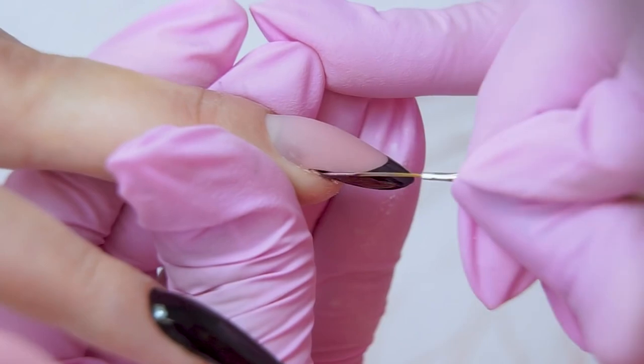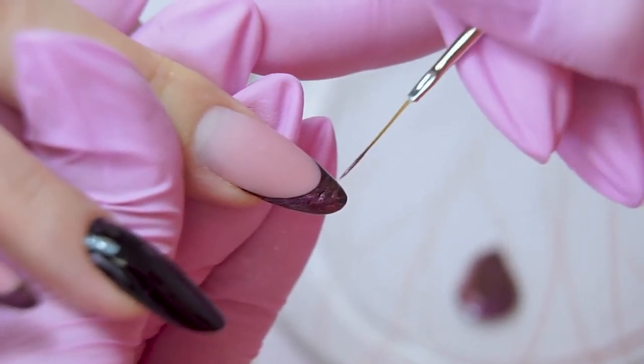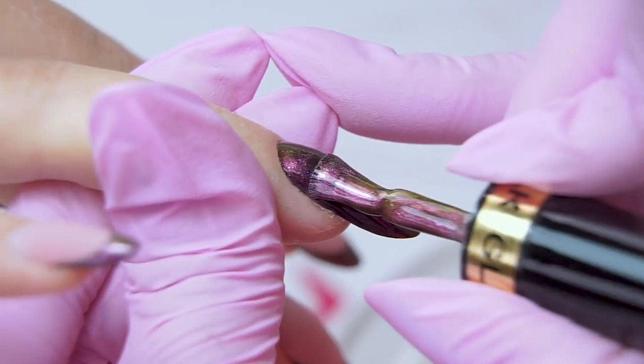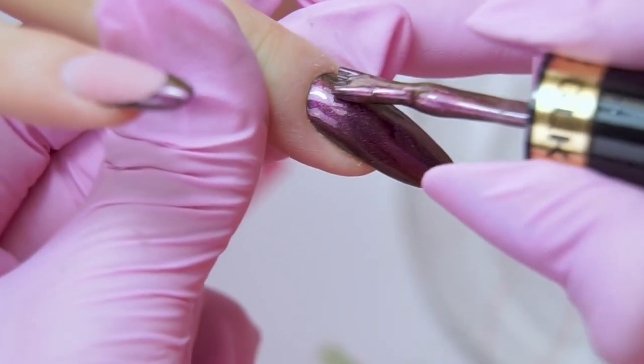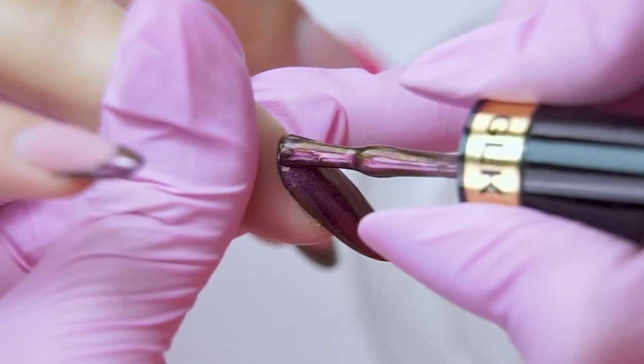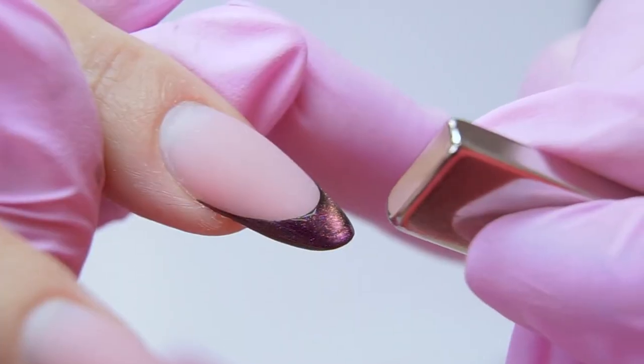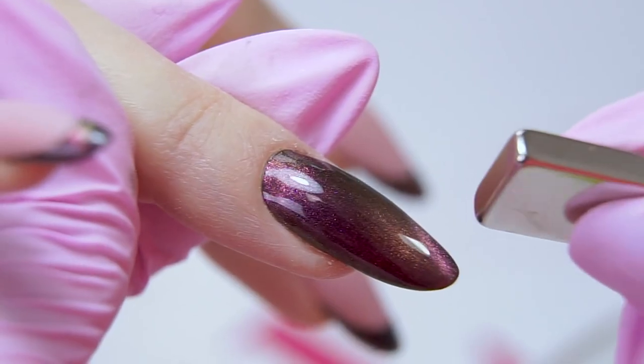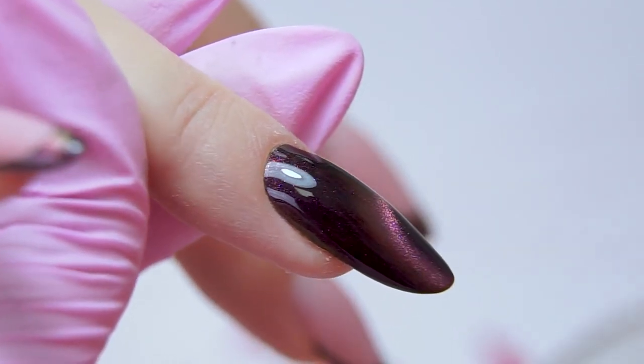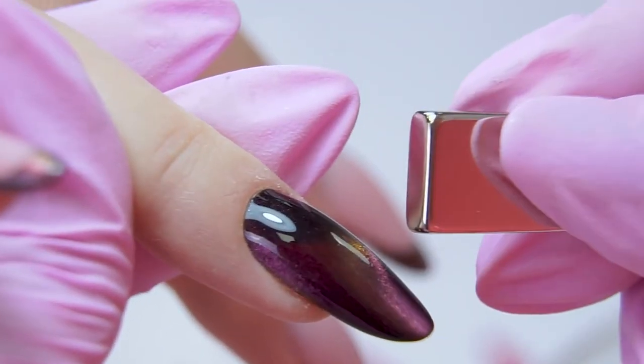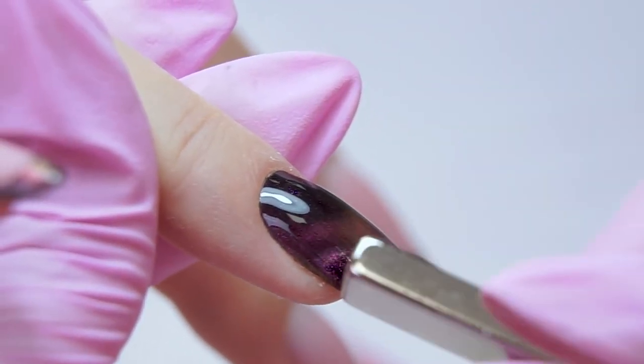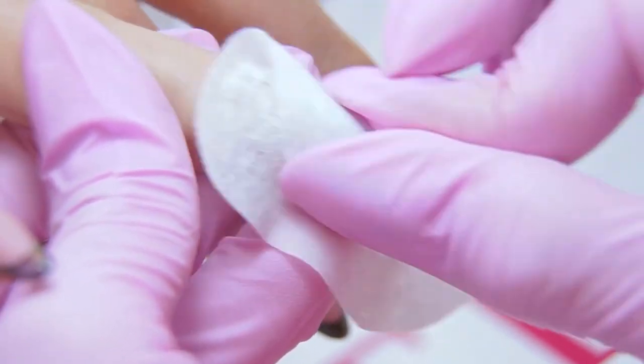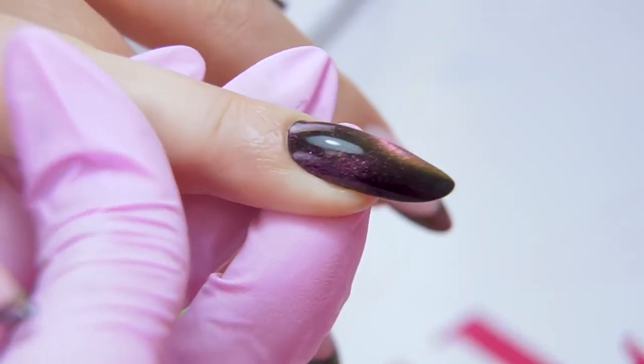Don't apply a thick layer, just a thin layer of the gel polish. Apply a magnet to form the highlight. Curing in the lamp, I remove the tacky layer and do some stamping over the cat's eye.